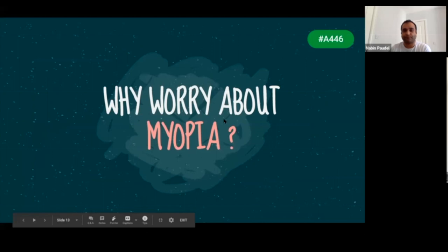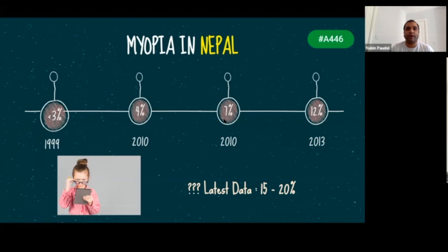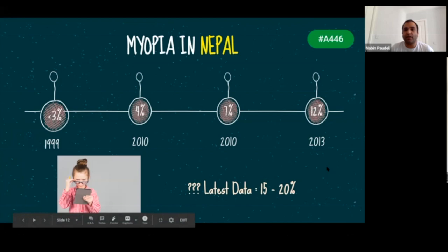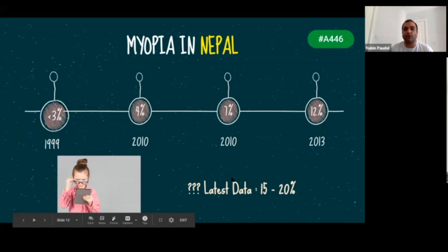Looking at the relevance to Nepal, I extracted some evidence-based data. In 1999, the prevalence of myopia was less than 3%. In 2010 it was 4%, another study showed 7%, and in 2013 it was 12%. We don't have the latest data — it's been seven years since we had recent data on myopia. Due to globalization, urbanization, and intense education, I'm assuming it could be anywhere between 15% to 20%, but we need a standard study to find the actual prevalence.